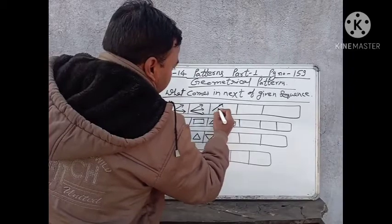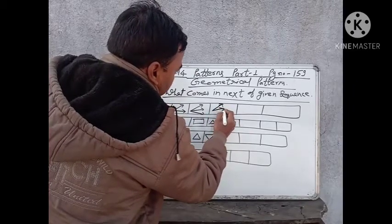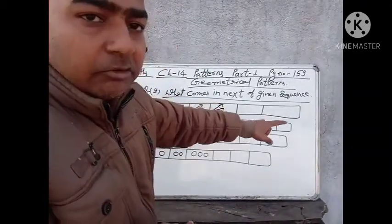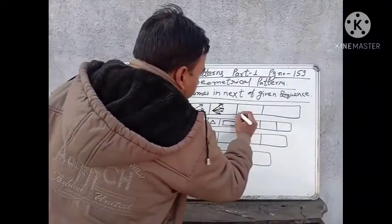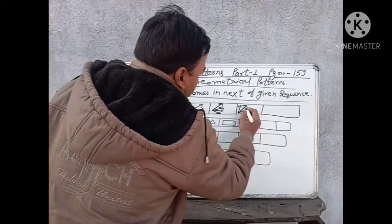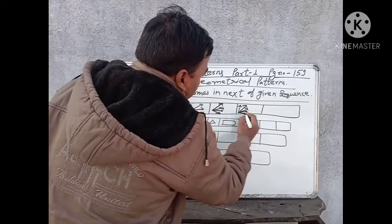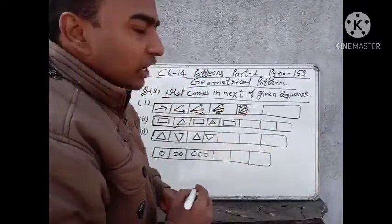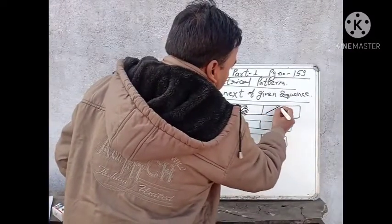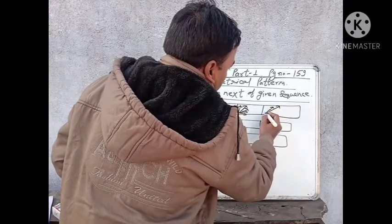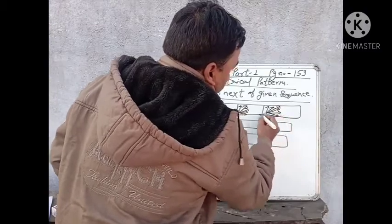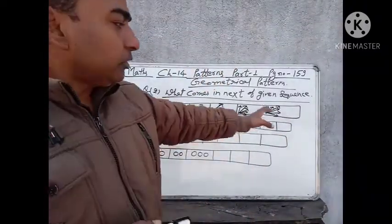Next one is four arrows — one, two, three, four. After four, what is the next? Next one will be five — one, two, three, four, five. And what is the last one? Last one will be six — one, two, three, four, five, six.